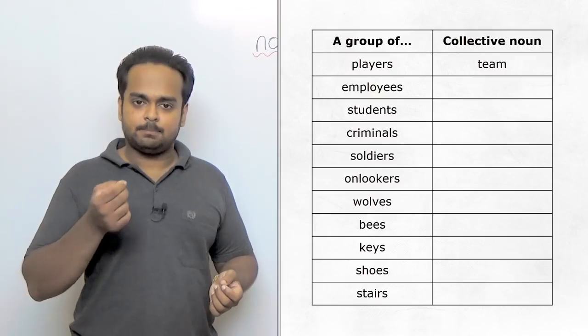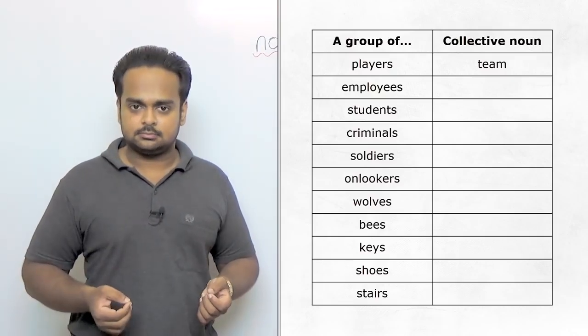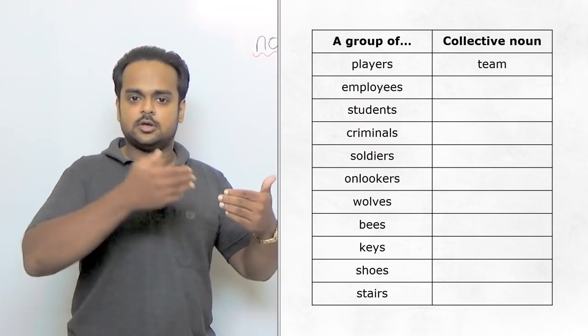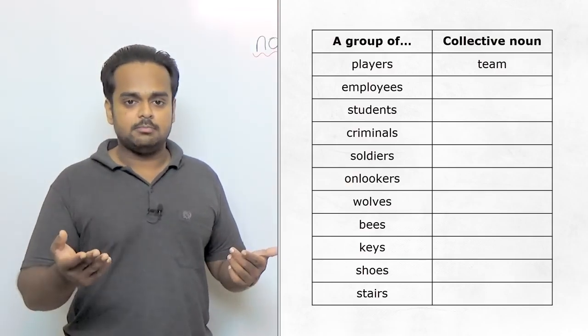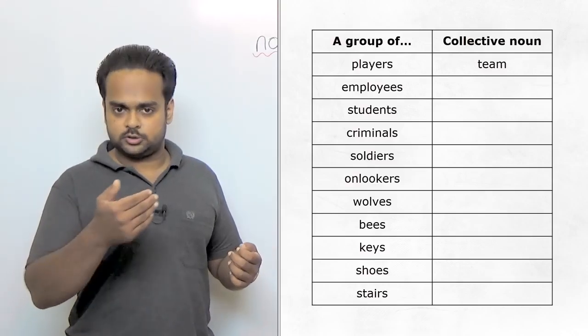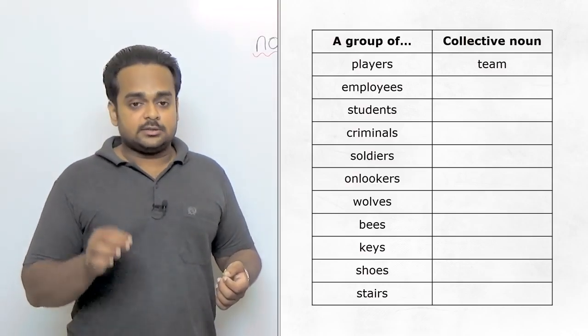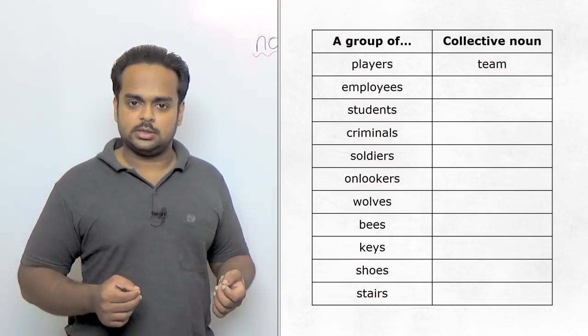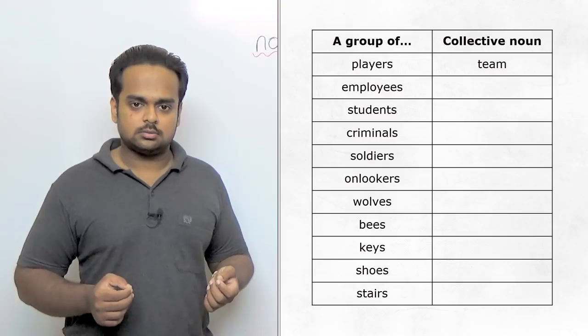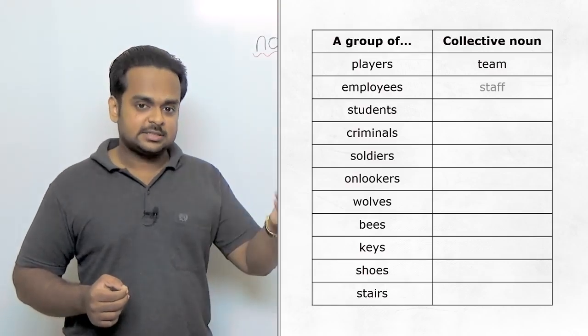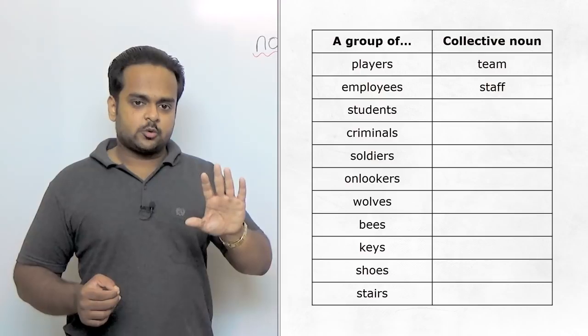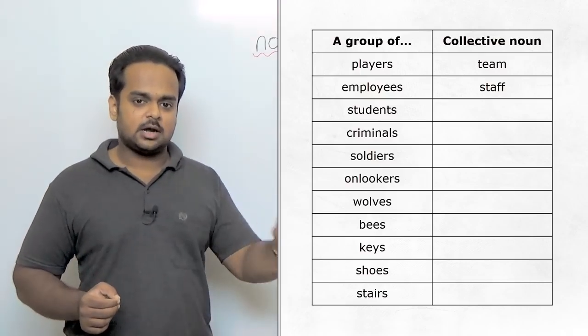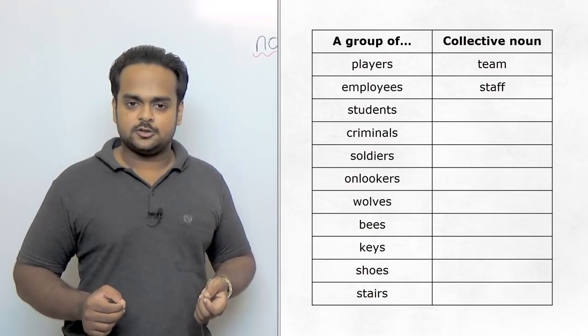A group of players is called a team. A team is a collective noun and it means a group of players or it could even mean a group of workers in a company. Actually there's another word for a group of workers or employees. Can you guess that word? That word is staff. On the screen I have some more examples but I want you to guess the collective nouns before I show them to you.